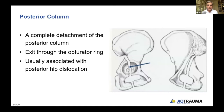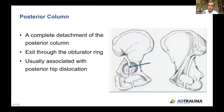The posterior column is similar to the posterior wall, except it detaches the entire posterior column. It exits through the obturator ring and up through the sciatic notch. It's usually associated with a posterior hip dislocation, which will follow the posterior column segment. The difference between this and the posterior wall is that it involves the obturator ring, whereas the posterior wall won't. It is only a posterior column if it exits into the obturator ring — an extended posterior wall that takes the entire retroacetabular surface and comes onto the quadrilateral surface is not a posterior column.